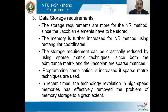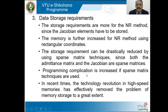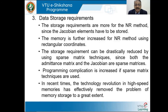Data storage requirements: the storage requirements for the NR method are higher as the Jacobian elements have to be stored. The memory is further increased for the NR method using rectangular coordinates. The storage requirement can be drastically reduced by using sparse matrix techniques. Since both the admittance matrix and Jacobian are sparse, we can use sparse matrix techniques, but programming complication is increased. In recent times, the technology revolution in high-speed memories has effectively reduced the problem of memory storage to a greater extent.